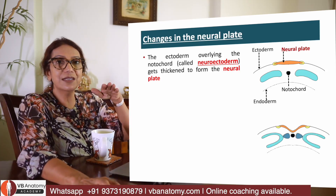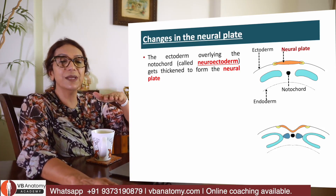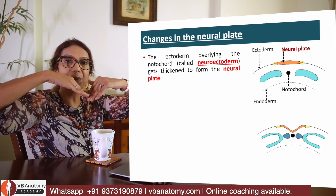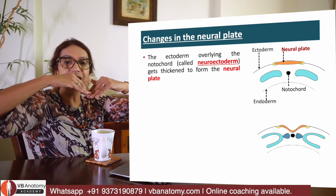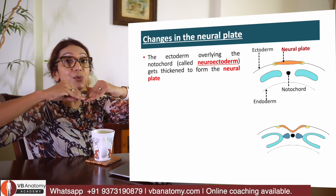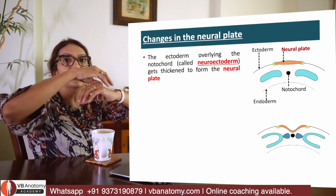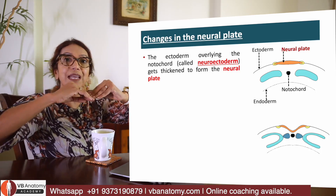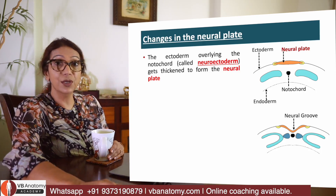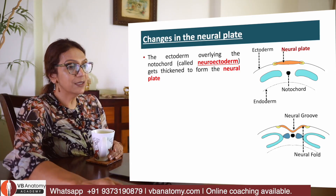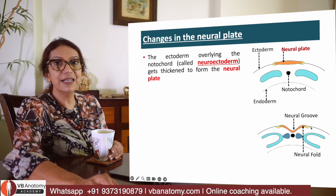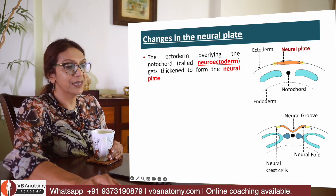In the next stage, this same neural plate now begins to get depressed. As it gets depressed, it creates two folds on the side which are called neural folds. Cells adjacent to the neural folds are called neural crest cells. You can see the neural groove or depression, the neural folds on both sides, and just the cells adjacent to them are called neural crest cells.